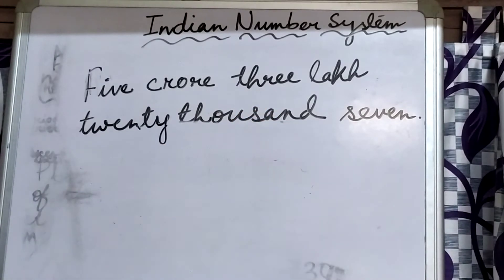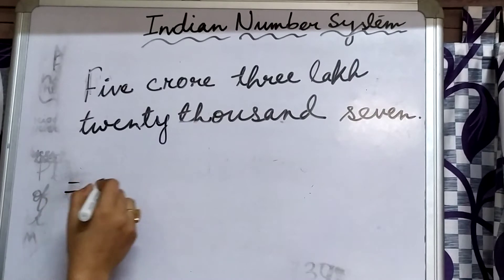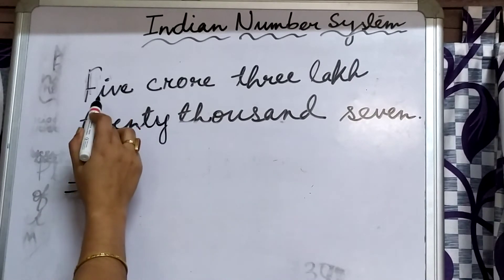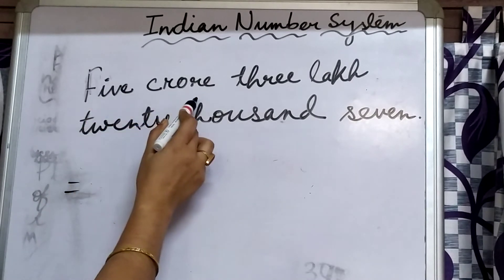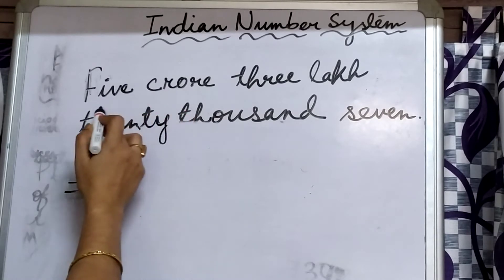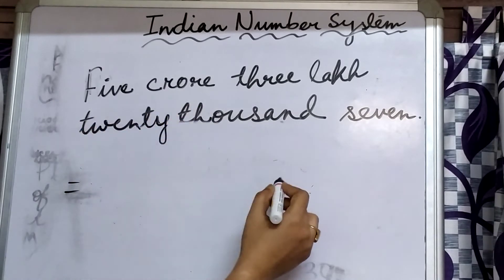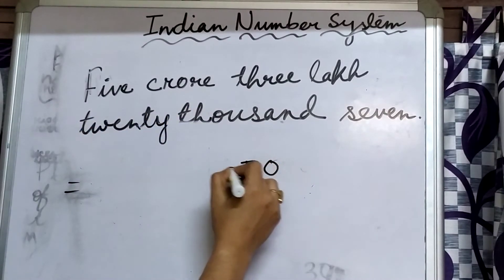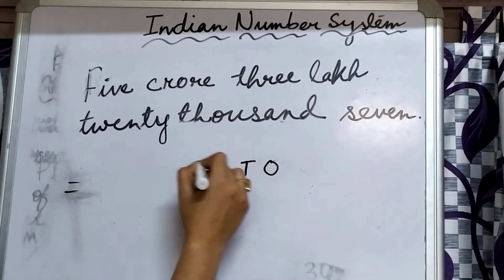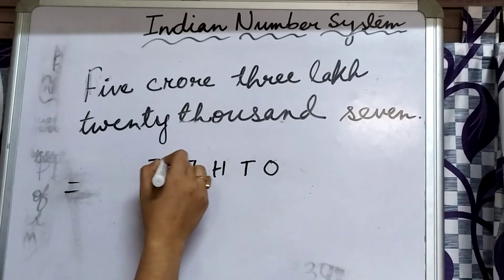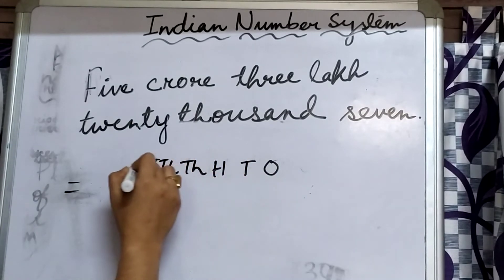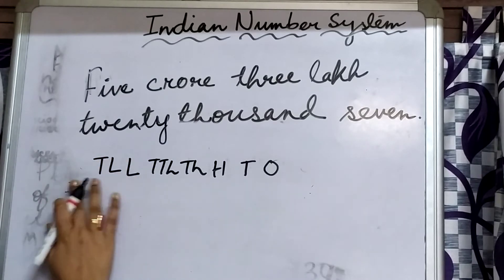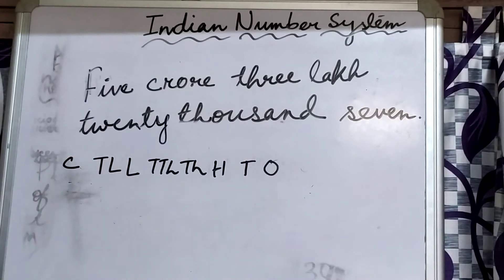First, we have to see up to which place it is. It is up to crore's place. So we have to write the places up to crore: ones, tens, hundreds, thousands, ten thousands, lakhs, ten lakhs, crores.